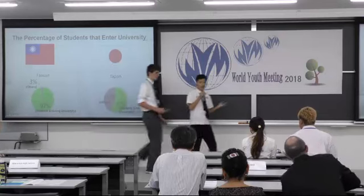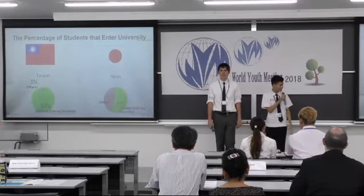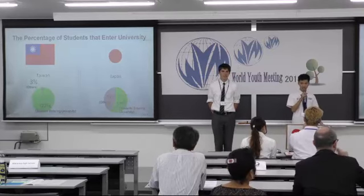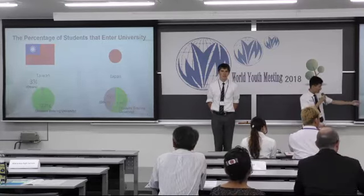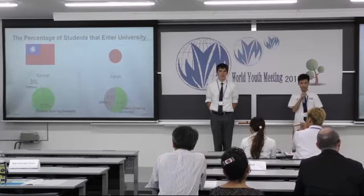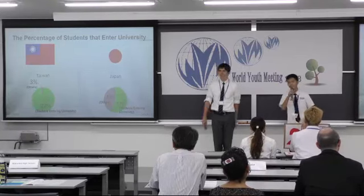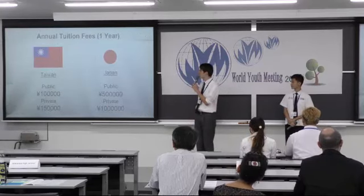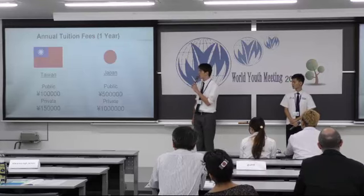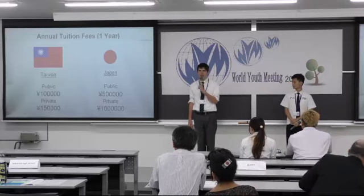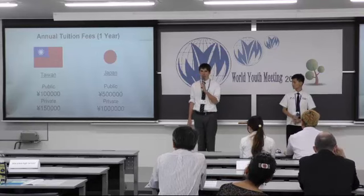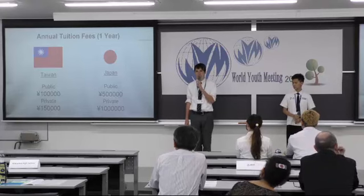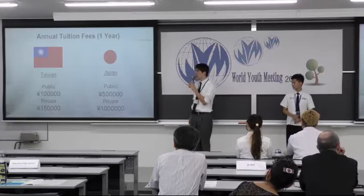Firstly, how many students go to university? In Taiwan, almost 97% of students go to university. In Japan, almost 57% go to university. Secondly, this is a comparison of annual tuition fees in both countries. In Taiwan, it costs about 100,000 yen for public schools and about 150,000 yen for private schools. In Japan, it costs about 500,000 yen for public schools and up to one million yen for private schools.